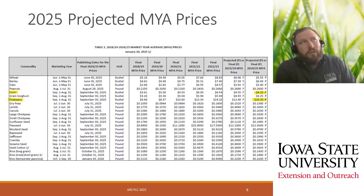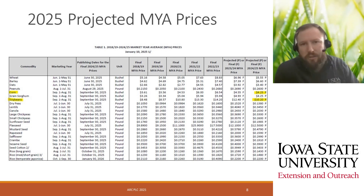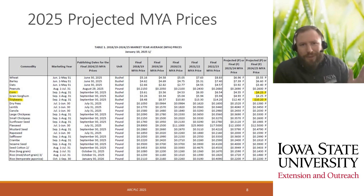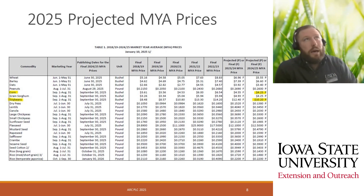My next slide covers the 2025 projected market year average prices. As of January 10th, 2025, I've highlighted the two primary crops here in Iowa. For corn, the market year average price is currently projected at $4.25, and soybeans at $10.20. Obviously, we're in a bit of a rally the last couple of weeks, so those are always subject to change. These are strictly projections from our national office, but something to keep in mind when looking at program options.